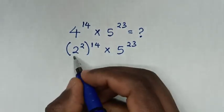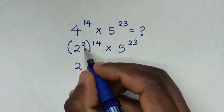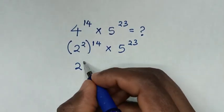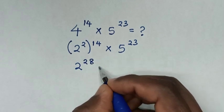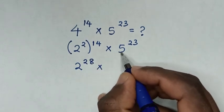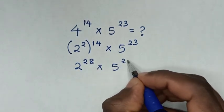Then it will be 2 to the power of 2 times 14, which is 2 to the power of 28, then times 5 to the power of 23.